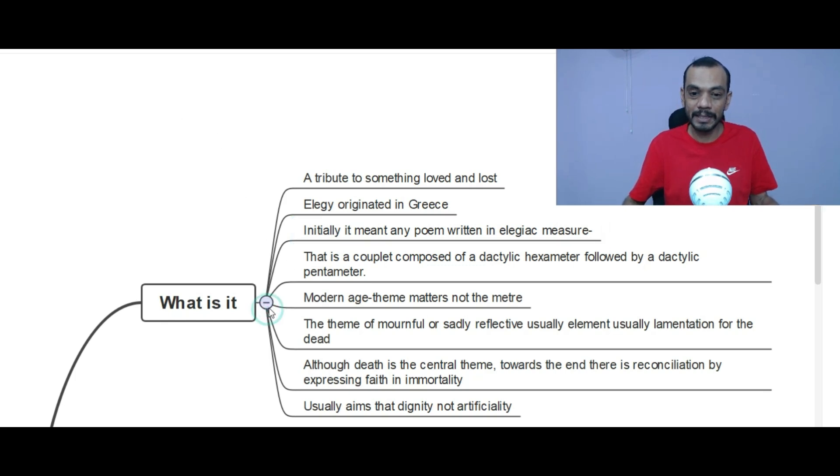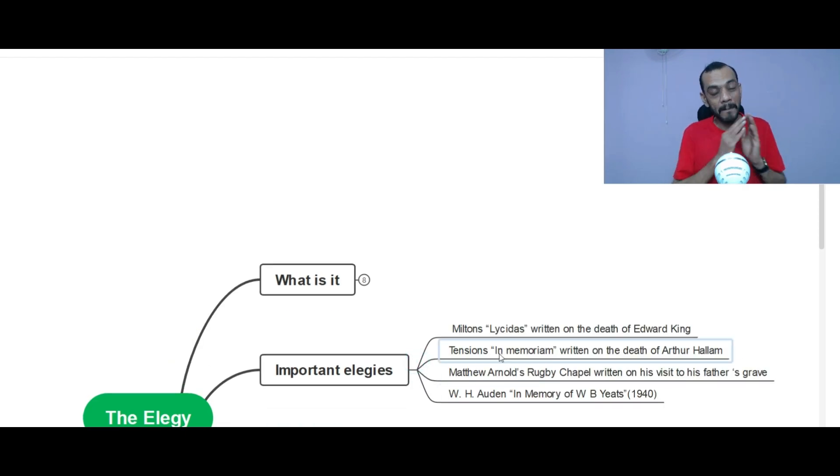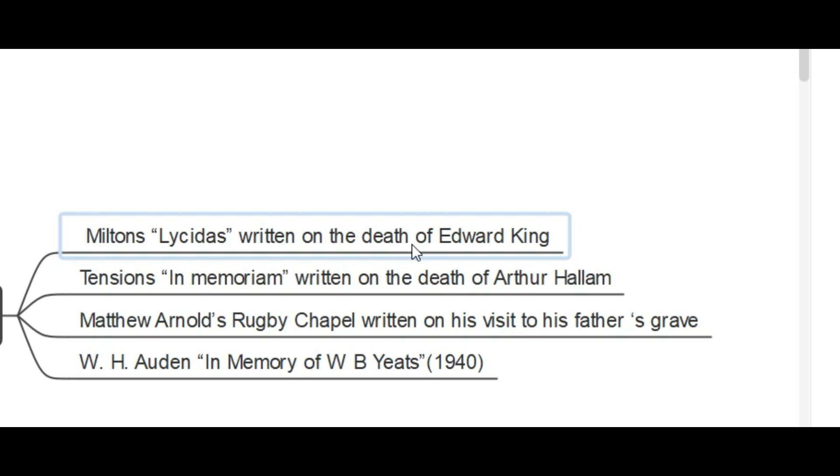And what are the important elegies in English literature? That is the second point we have to deal with. There are four important ones. One is Milton's Lysidas, written on the death of Edward King. And the second one, Tennyson's In Memoriam. It was written on the death of his friend, Arthur Hallam.